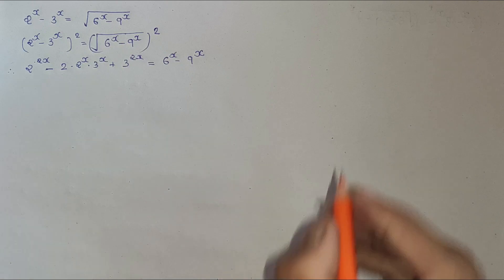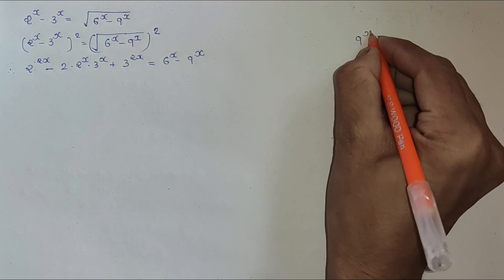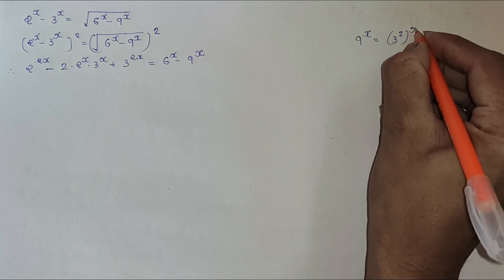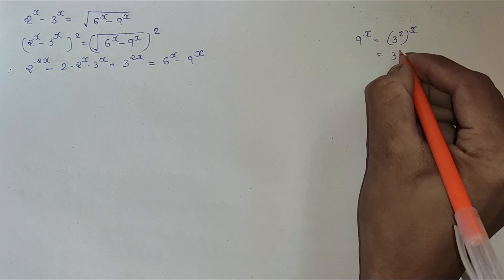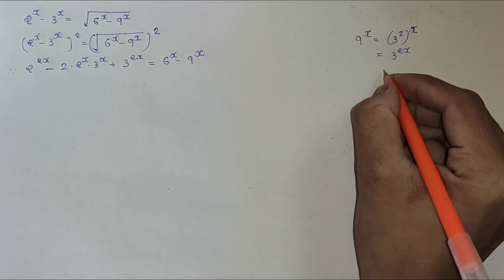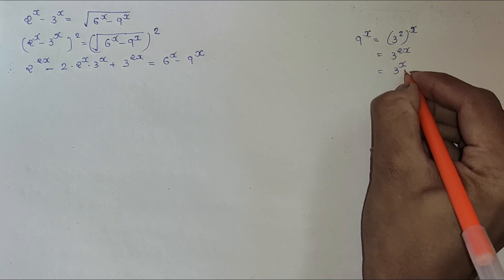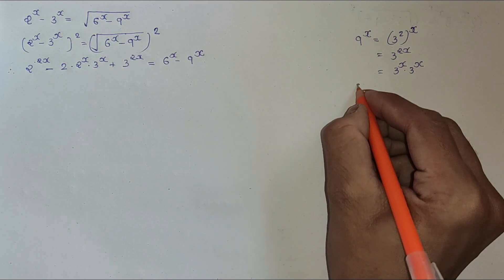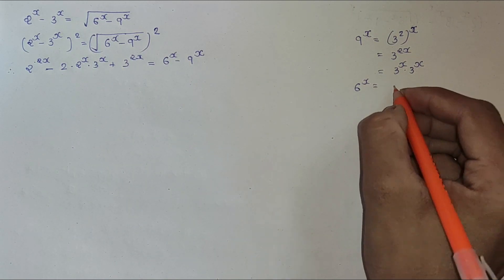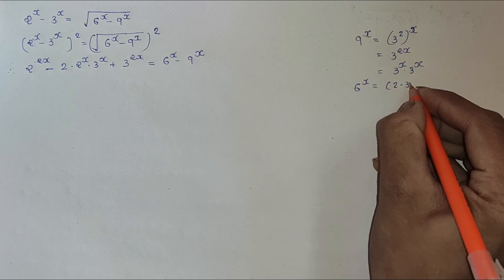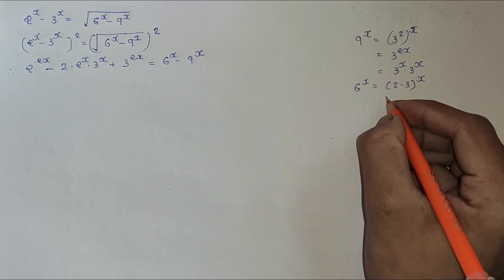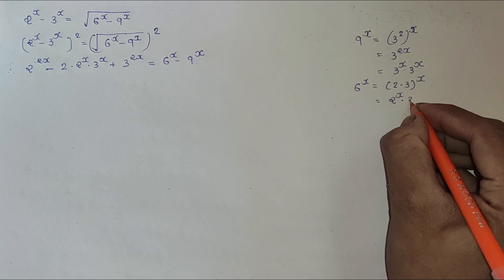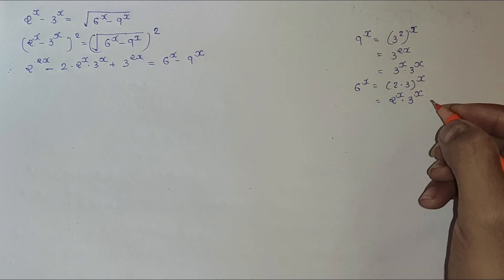Now we know 9 to the x equals 3 squared to the x, which is 3 to the 2x, and also 3 to the x multiplied by 3 to the x. Similarly, 6 to the x equals 2 times 3 to the x, which is 2 to the x multiplied by 3 to the x.